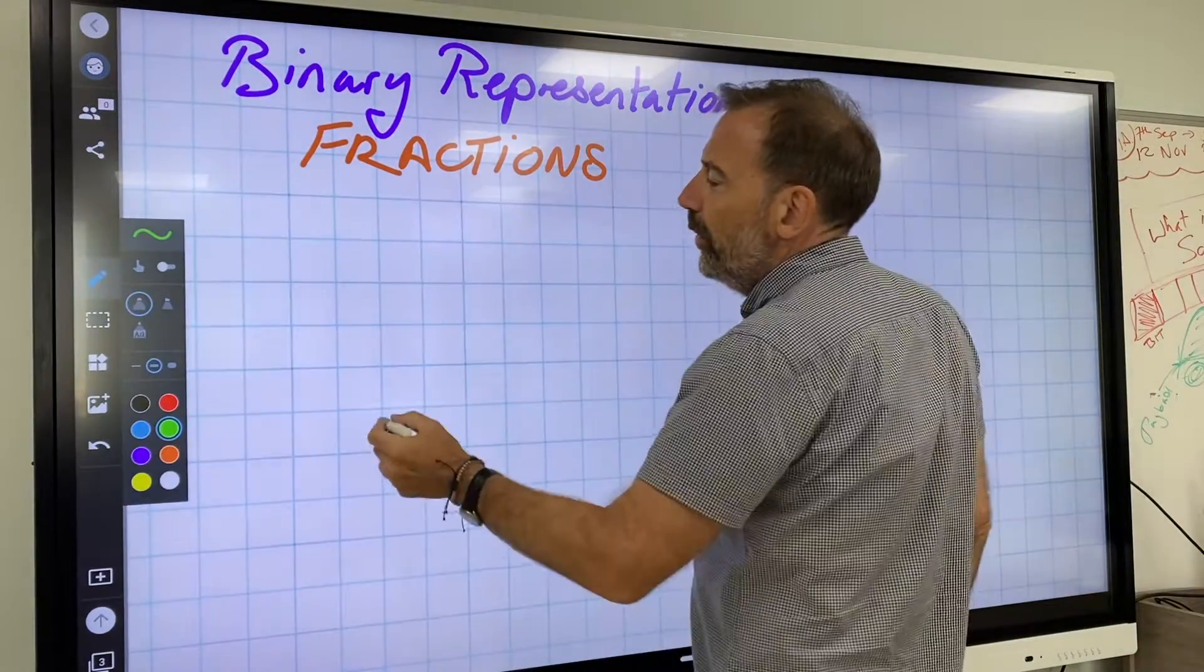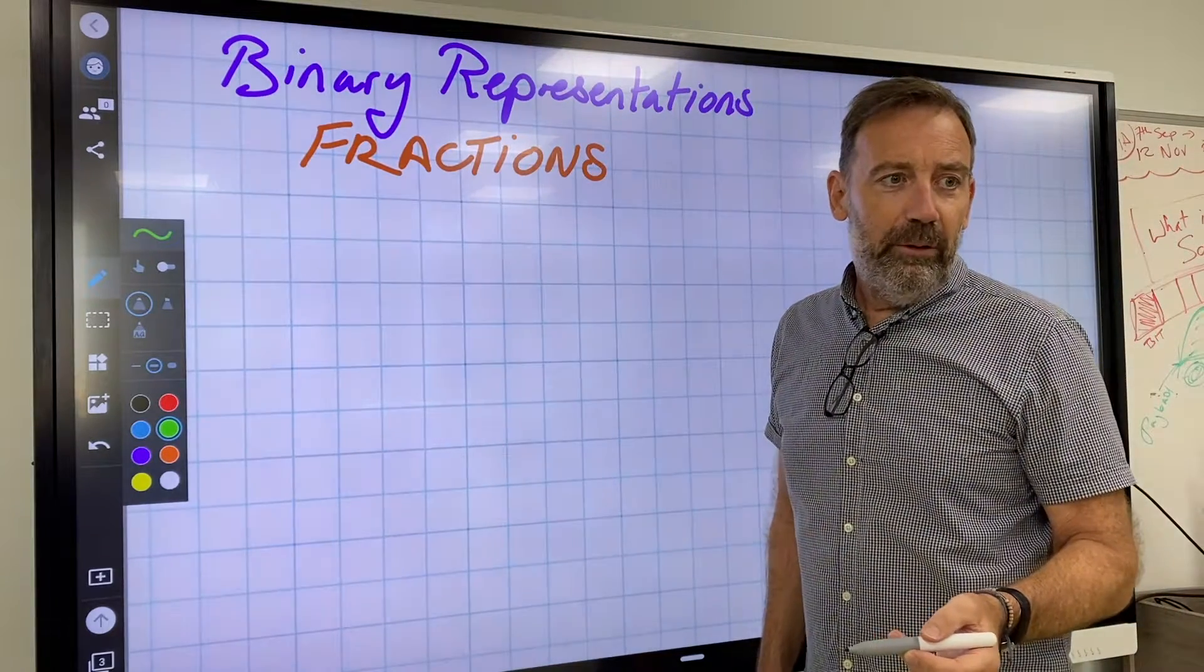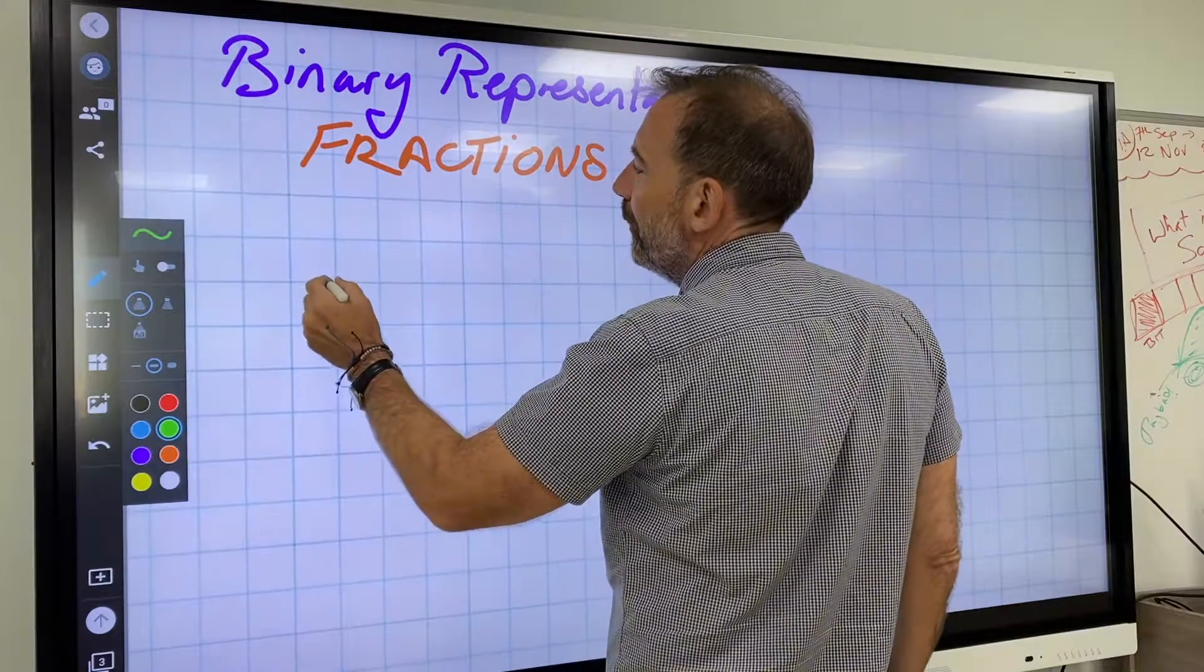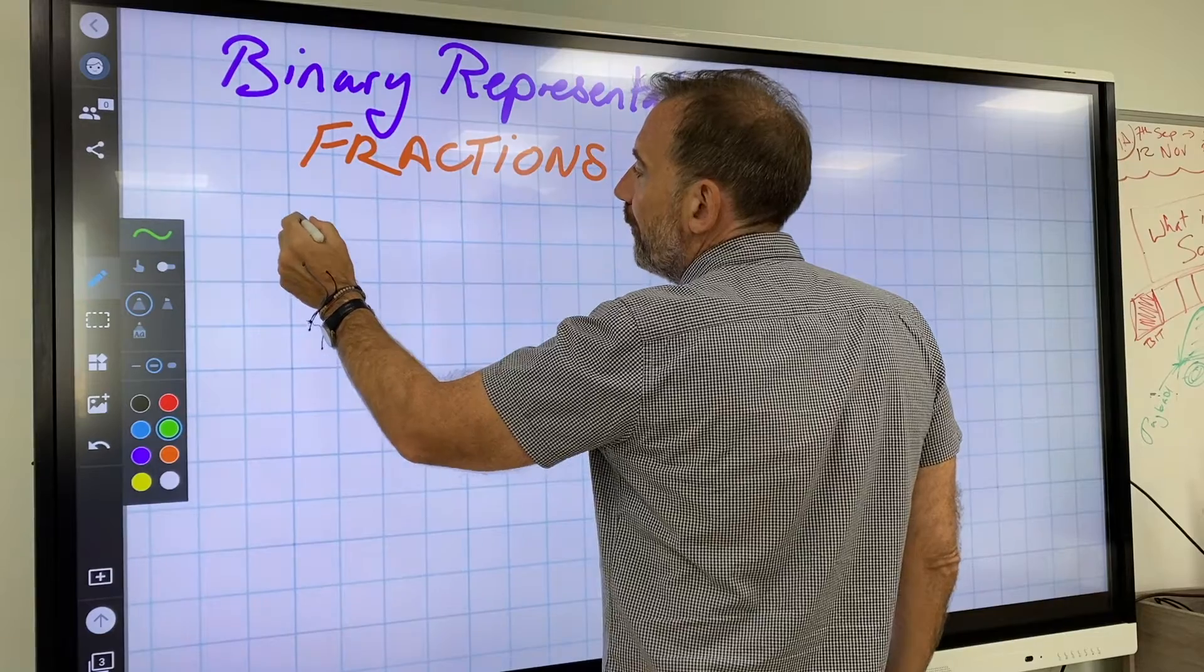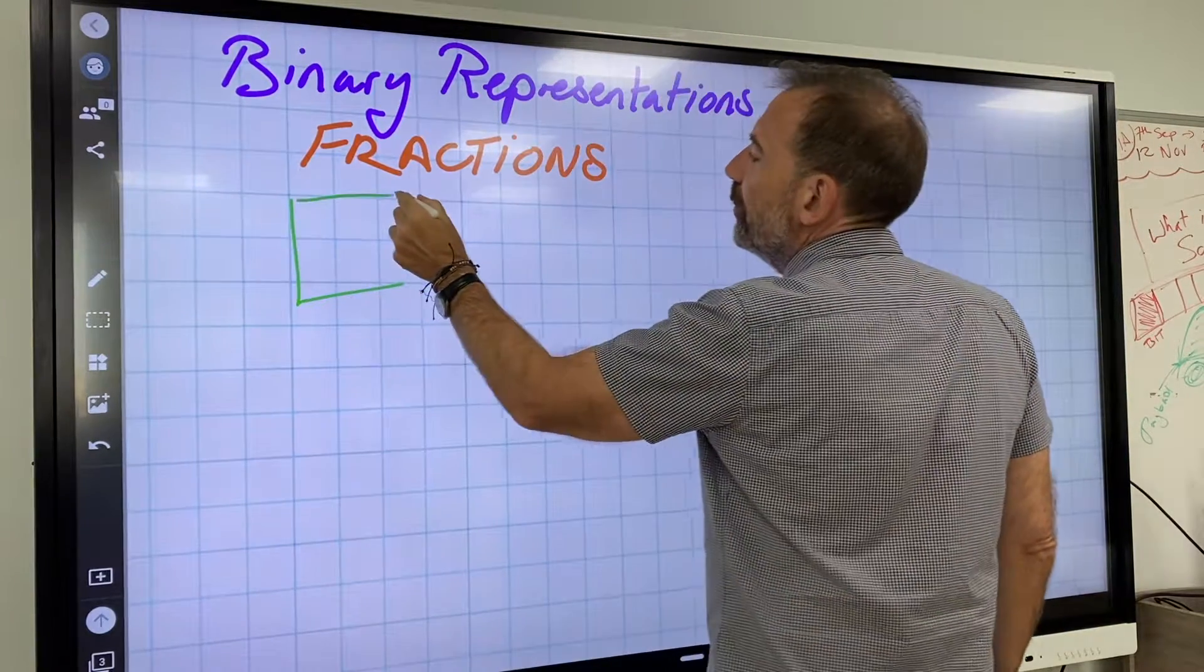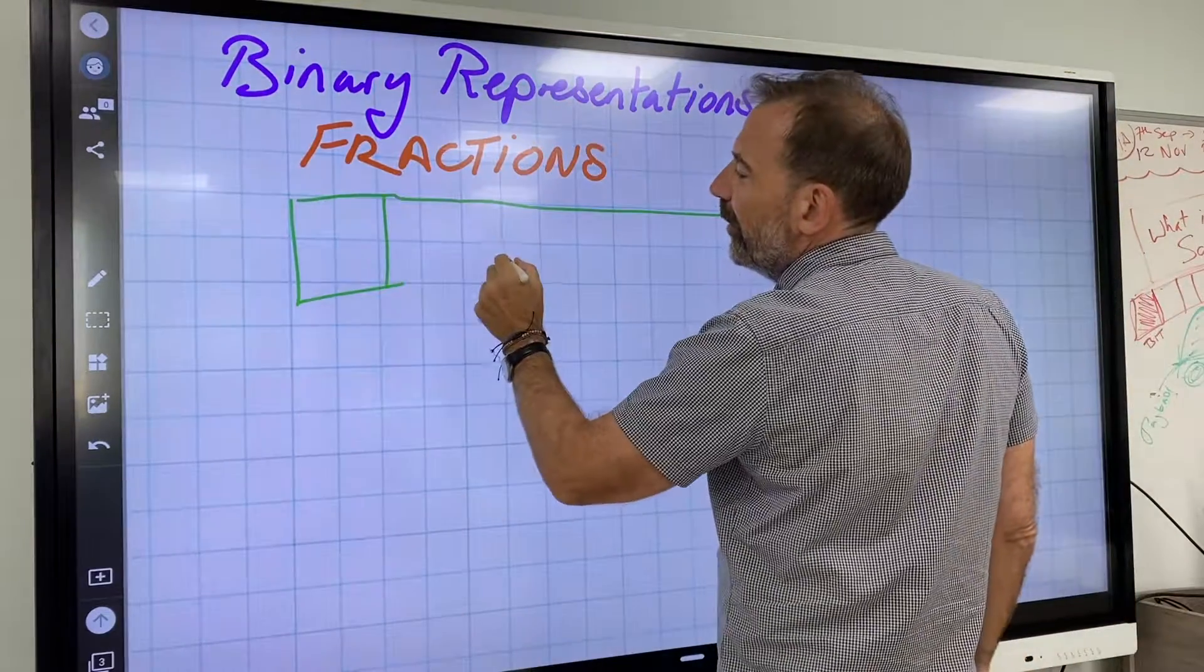So we're going to be doing something with two nibbles. Happy with that? You know what a nibble is? You can't remember? It's four bits, eight bits to a byte. Let's go around like this.